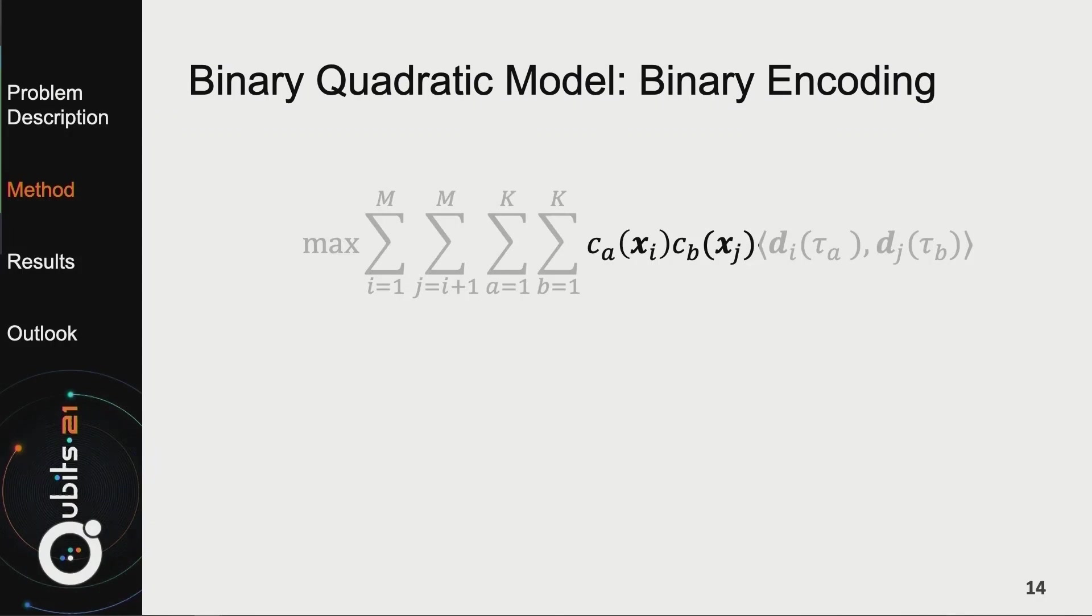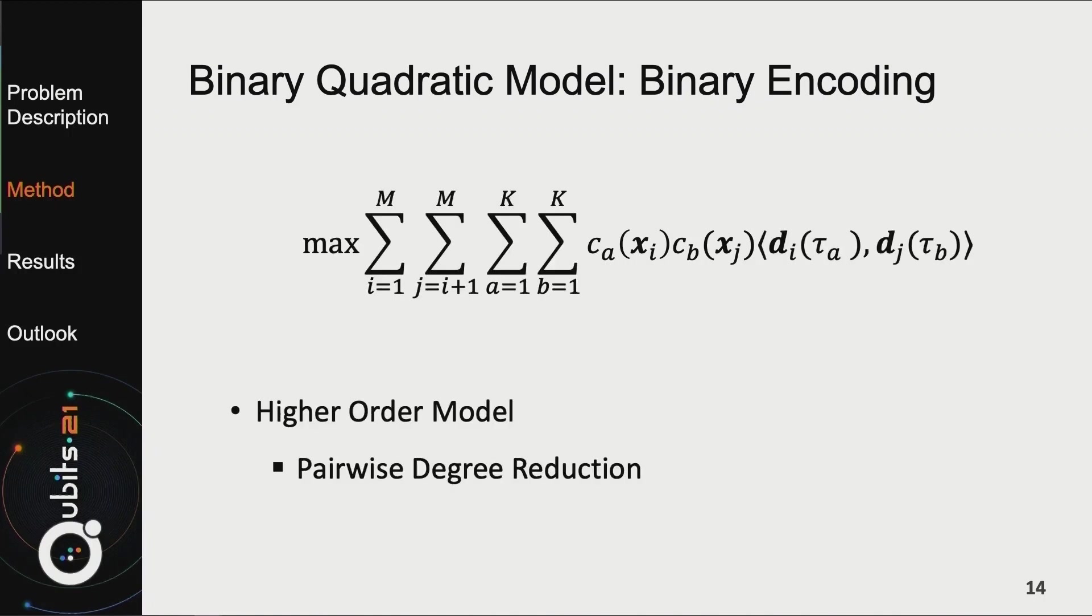That's basically the same for the binary encoding. That resulted in the following model. It looks very similar. However, instead of these variables, x_ia and x_jb, we now have these functions. These functions are actually higher degree polynomials which enforce these binary encodings. However, this gives us a higher order model. But we need a quadratic model for the D-Wave machines. So for that, we used pairwise degree reduction provided by D-Wave. It's just one line of code. It's really easy to implement. Why would we do all this extra effort for this binary encoding? Well, basically because it always gives a meaningful result. It can never happen that we select a trace multiple times or not at all. What I want you to take away from this method section mostly is that we actually have two binary quadratic models: a binary encoding model and a one-hot encoding model.